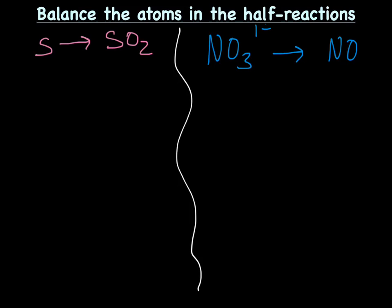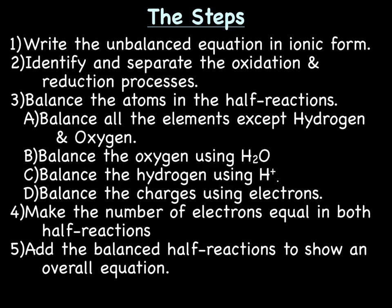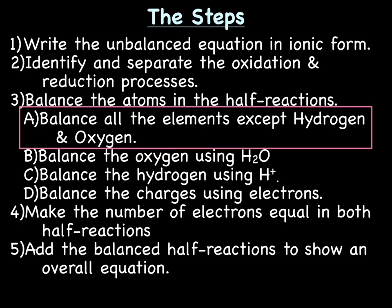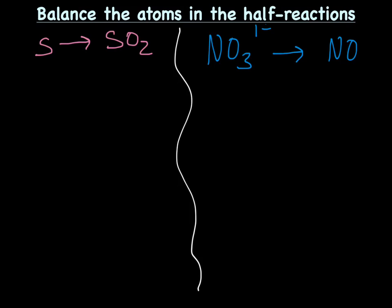Now we're going to balance the atoms in the half reactions. Remember, this step has four parts. First, we're going to balance all of the elements except hydrogen and oxygen. On the oxidation half, we have S and S — same on both sides. On the reduction half, we have 1 N and 1 N — same on both sides. So we don't have to do anything there.